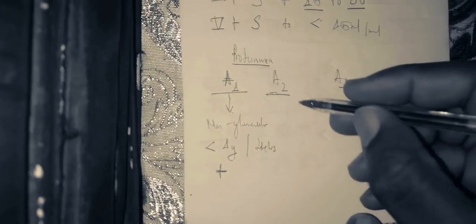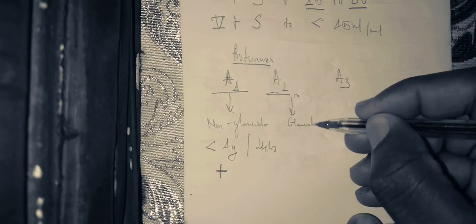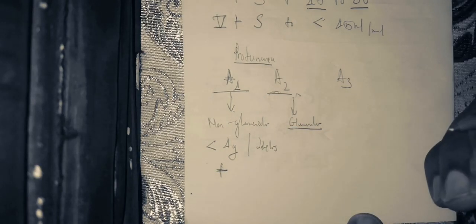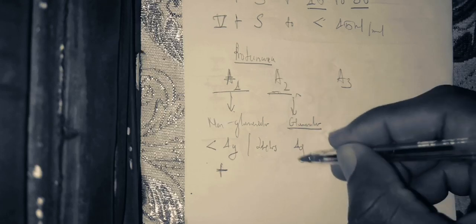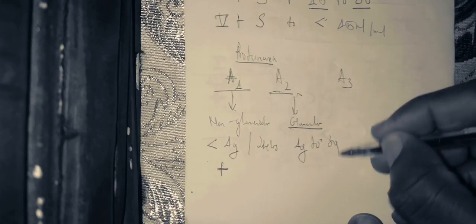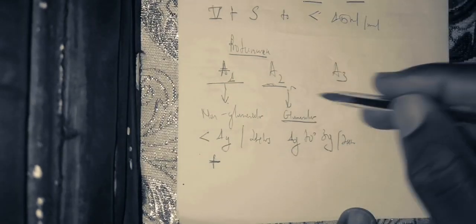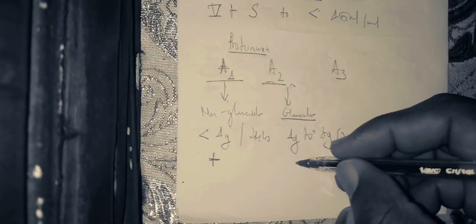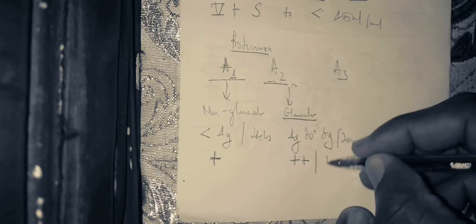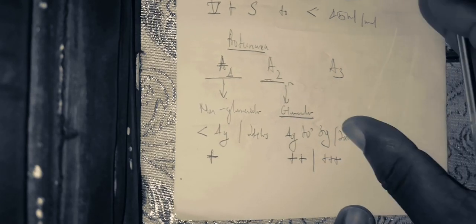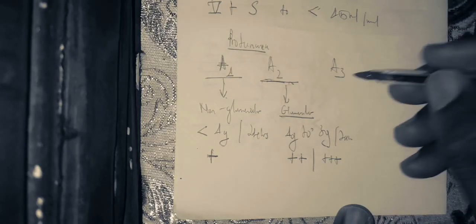In the case of A2, you have glomerular proteinuria, meaning the protein level is 1 gram to 3 grams in a 24-hour urine sample. You will have a dipstick urinalysis showing 2 plus or 3 plus, which corresponds to the A2 classification.